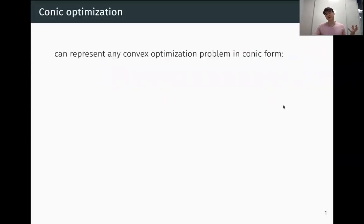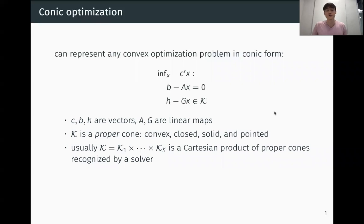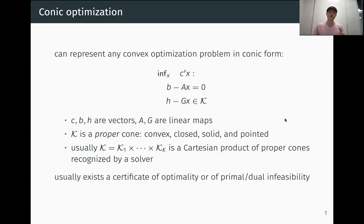We can represent any convex optimization problem in conic form, which looks like this. Here, C, B and H are vectors and A and G are linear maps. K is a proper cone, meaning it's convex, closed, solid and pointed. Usually the cone K is a Cartesian product of proper cones that are recognized by some solver. An advantage of conic form is that they usually exist as a certificate of optimality or primal or dual infeasibility for the problem. And these certificates are simple and easy to verify.